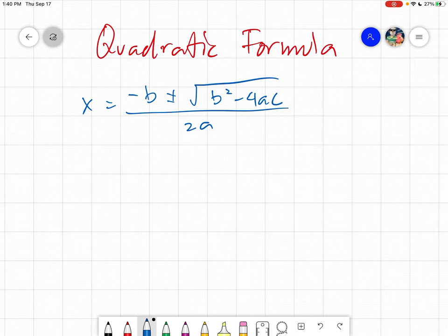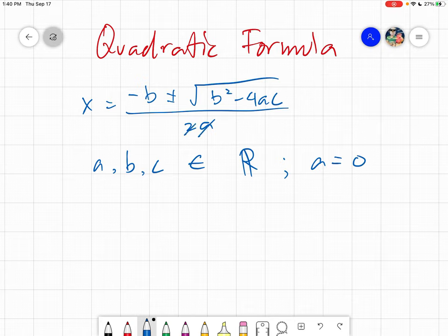For the properties, a, b, and c are elements of any real number with a restriction of a not being zero. Because if you will notice, if a becomes zero then the denominator becomes zero, and you are dividing by zero, which is of course not allowed in mathematics.